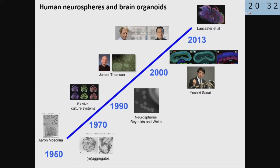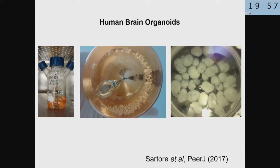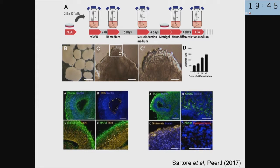It's important to acknowledge the work of several scientists over the last 70 years in creating three-dimensional cultures of brain cells — starting with Aroma Scona, then Reynolds and Weiss, then Yoshiki Sasai, and finally Madeline Lancaster, who created what are called brain organoids. When we cut these organoids, you see several characteristics of the developing brain, including interkinetic nuclear migration, cell divisions close to the ventricle, and other markers of brain development.